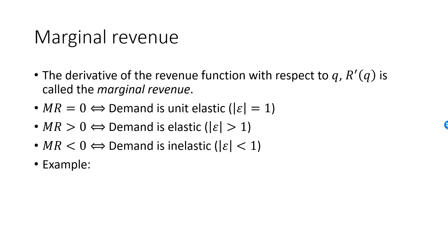Here is another simple example. Say that the demand function is given by some constant C divided by price, with the inverse demand function P equal to C divided by Q. We have seen that the price elasticity of demand is equal to minus one for all prices and quantities on the demand curve in this case.